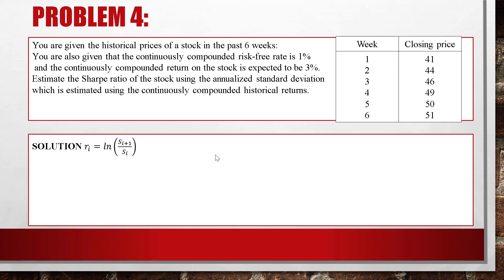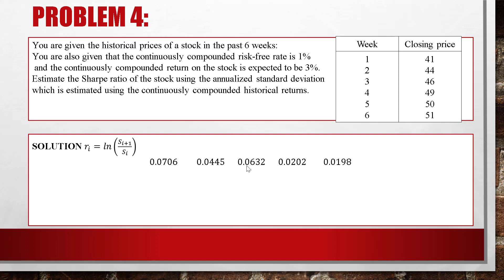To calculate the Sharpe ratio, first calculate the continuously compounded historical returns using Ri = ln(S_{i+1} / S_i). We have 5 values: R1 = 0.0706 (= ln(44/41)), R2 = 0.0445 (= ln(46/44)), R3 = 0.0632 (= ln(49/46)), R4 = 0.0202 (= ln(50/49)), R5 = 0.0198 (= ln(51/50)).